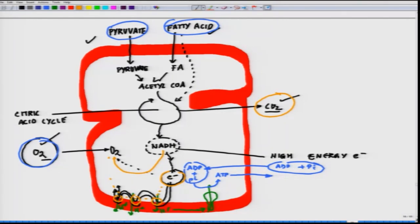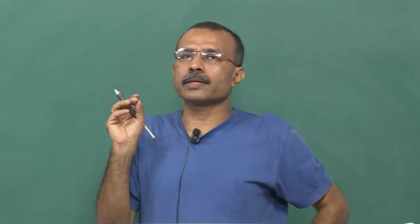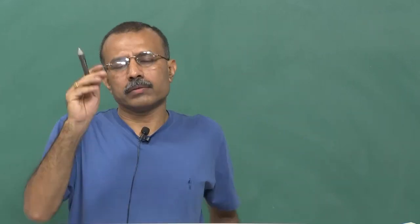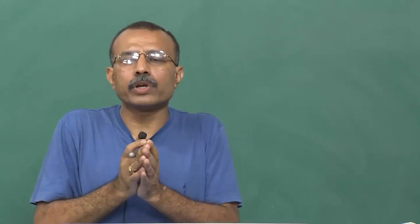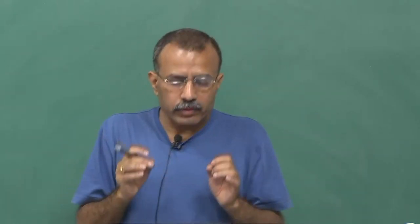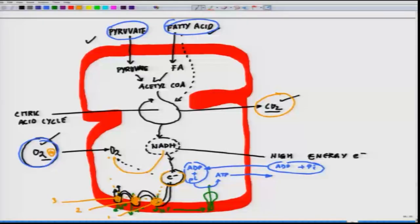Each complex in the chain has greater affinity for electrons than its predecessor, and electrons pass sequentially from one complex to another until they are finally transferred to oxygen, which has the greatest affinity for electrons. If we arrange these complexes in terms of their redox potential, each one has more affinity than the last - the first, second, third, and then oxygen has the maximum affinity to pick up the electron.